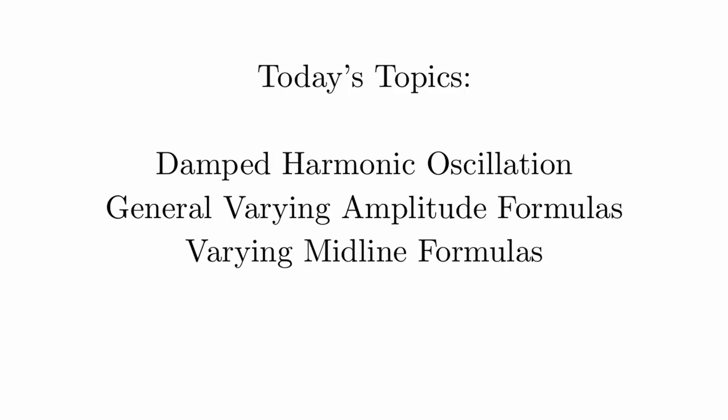Today's topics: we're going to talk about three different things. Damped harmonic oscillation — we're going to talk about the general idea of varying the amplitude of our sine and cosine functions and look at some of the outcomes of that. We're also going to talk about functions where the midline is varying, so instead of having a constant midline, the midline is now varying as well, giving us another type of shape. If you have any questions about anything, as always, you can send me a message over Canvas.